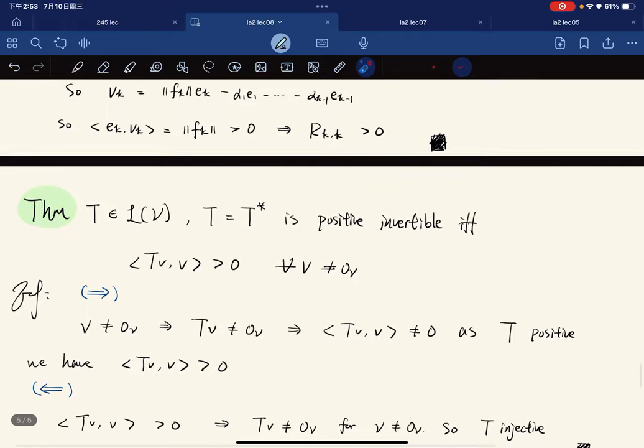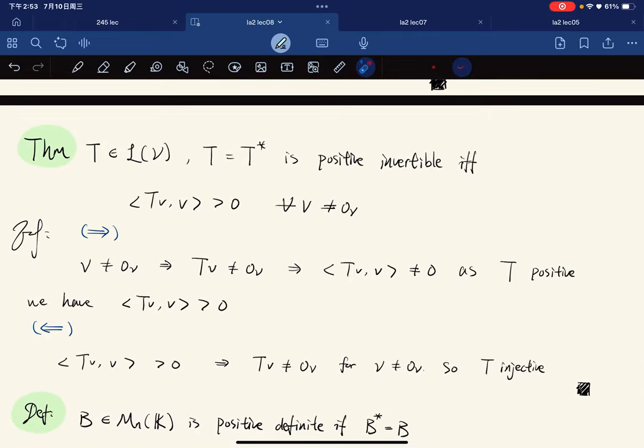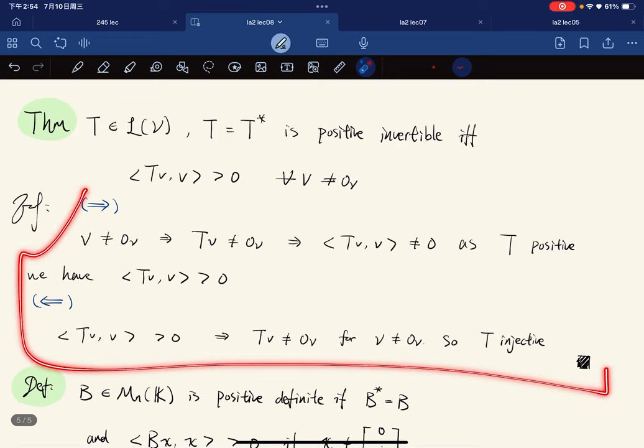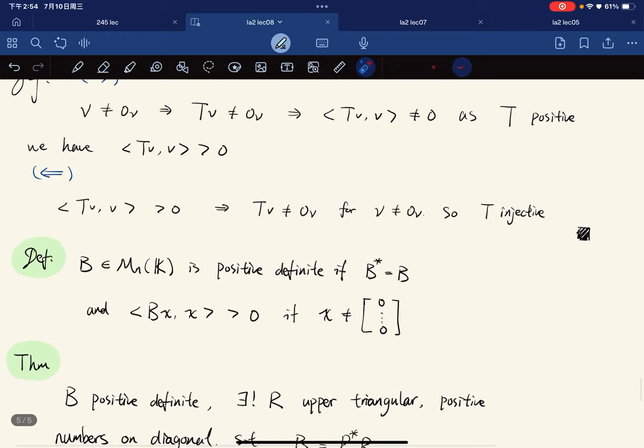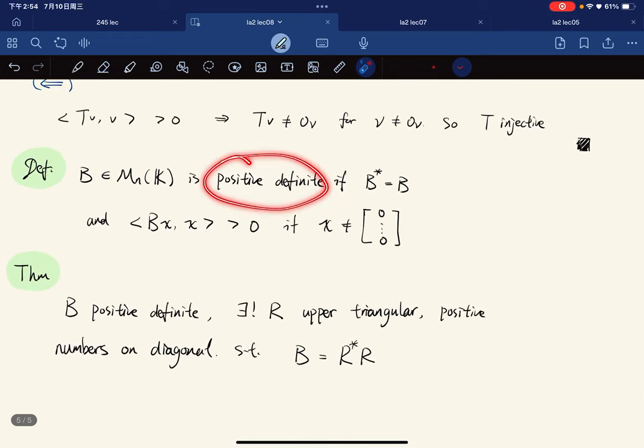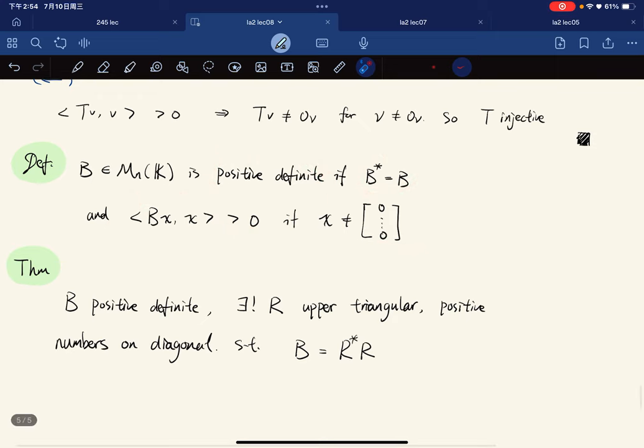We said an operator that is positive definite if and only if we have <Tv,v> positive for any non-zero vector v. The proof is trivial. And we said that a matrix is positive definite if it's self-adjoint and <Bx,x> is positive for x not equal to zero.